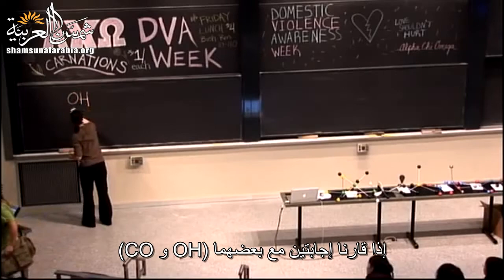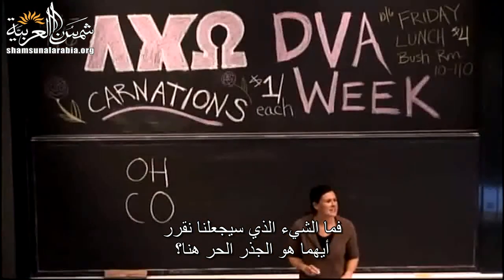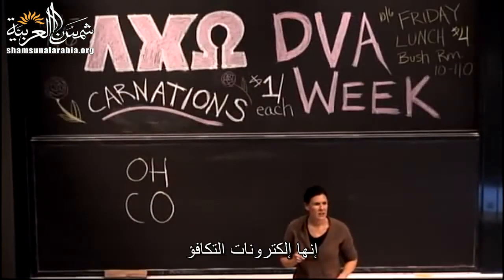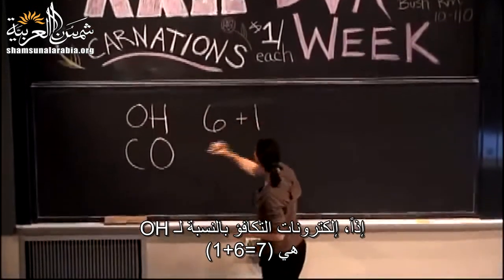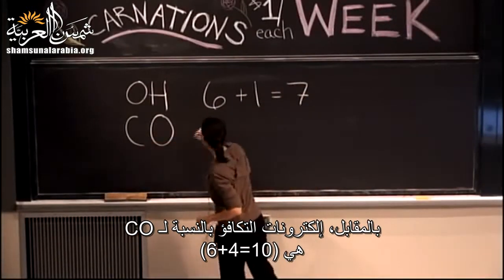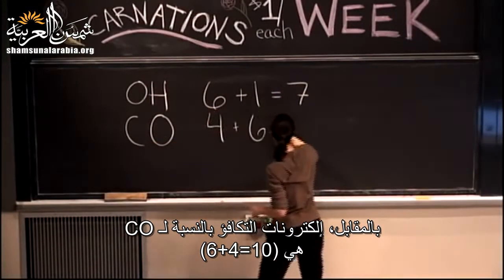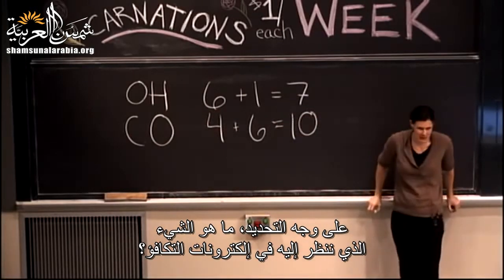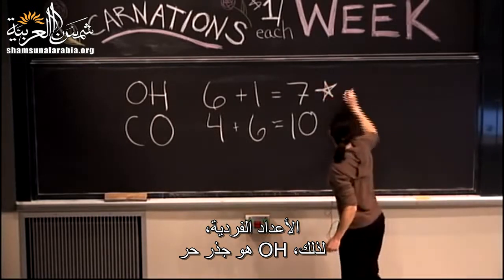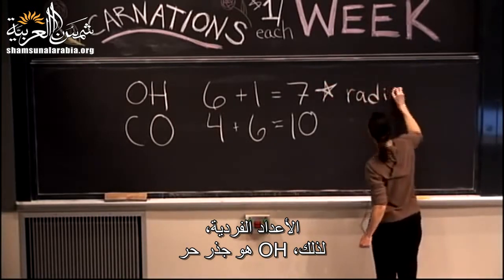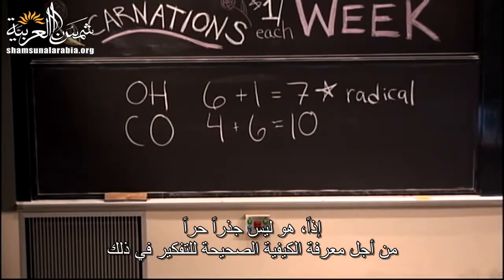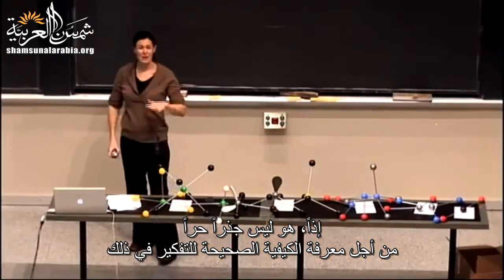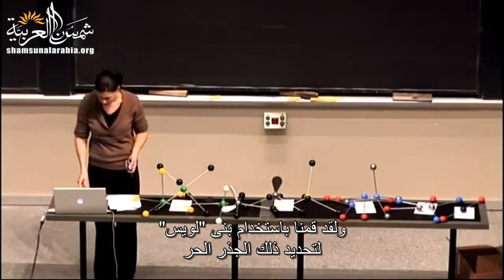If we're looking at OH versus CO, what are we looking at to decide if we have a radical here? Valence electrons. We have 6 plus 1 in terms of OH — that's 7 — versus having 4 plus 6, which is 10. We look for odd numbers. So we have a radical with OH, whereas CO has an even number of valence electrons, so it's not a radical based on our Lewis structures.